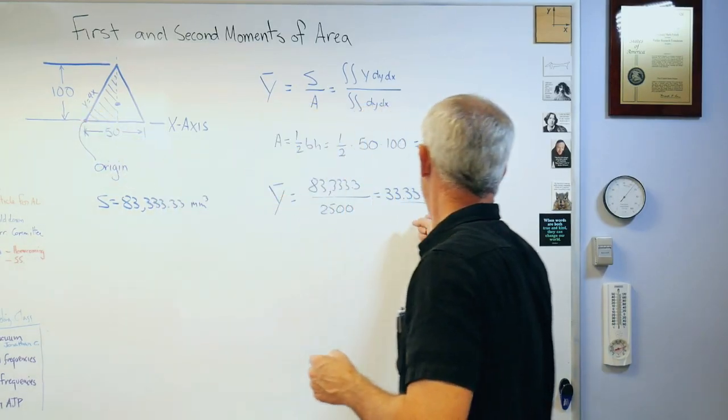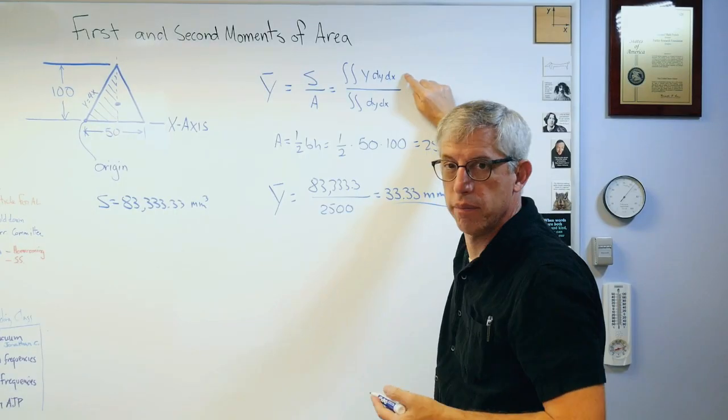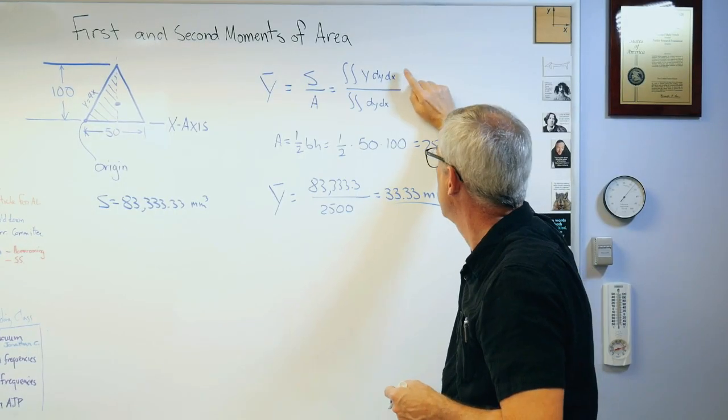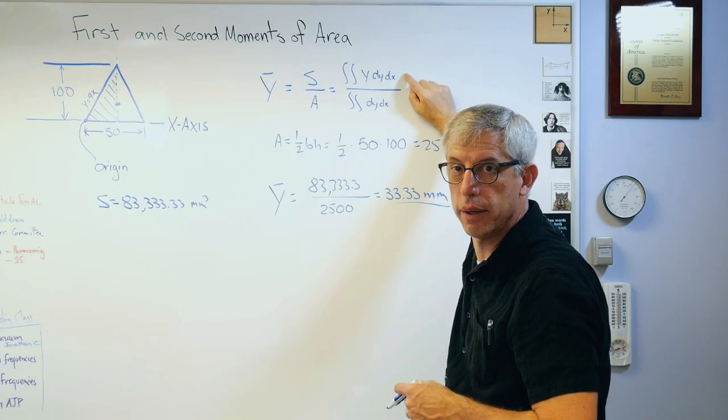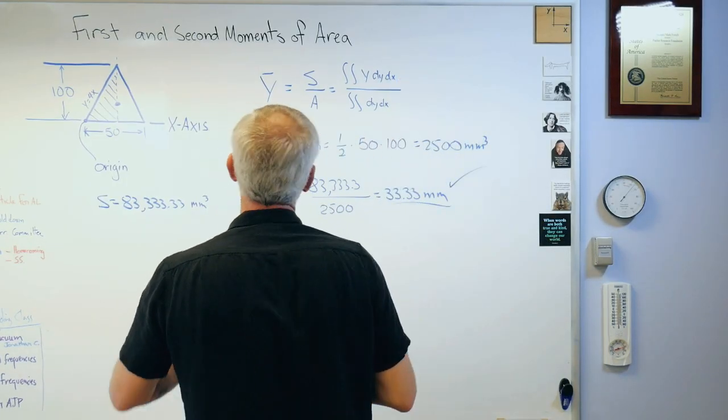Well, the centroid of the triangle is a third of the way from the base to the top. 100 over 3, that's right. So we just got the right answer and we did it using the way every mathematician does it, using a first moment of area. There's first moment of area.